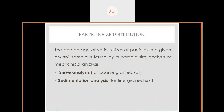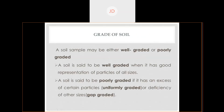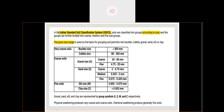Particle size distribution is done by two approaches: sieve analysis and sedimentation analysis (also called hydrometer analysis). Sieve analysis is done for coarse-grained soil, and sedimentation analysis is done for fine-grained soil. For now, we are only discussing sieve analysis for coarse-grained soil — specifically sand and gravel. We cannot do particle size distribution of fine-grained soil by sieve analysis; we will discuss why in coming classes.